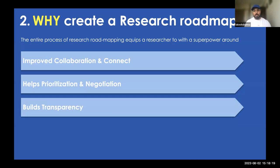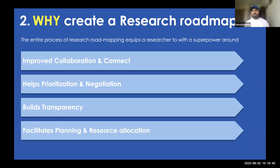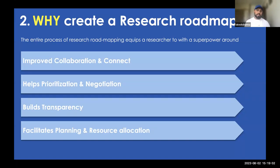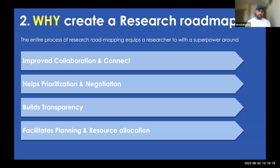The roadmap also builds transparency — it keeps you transparent as a researcher about exactly what you're working on, what your priorities are, and how your studies will translate into understanding user needs. It also facilitates planning and resource allocation. If you have four researchers and you know the roadmap and who is aligned where, it's easier to allocate resources. For example, if someone is working on a usability session — a four-week timeline — you know they'll be available next month for something new. You are completely in control of your projects.